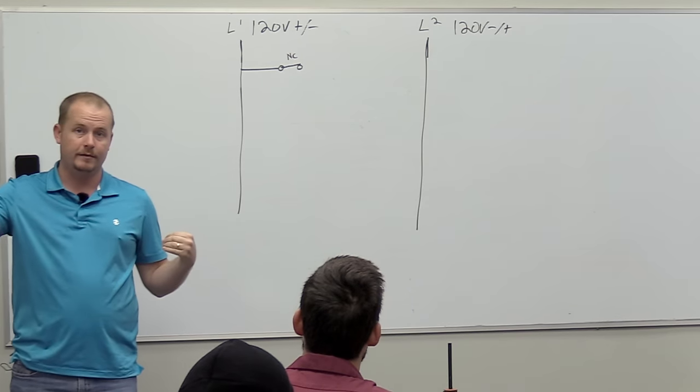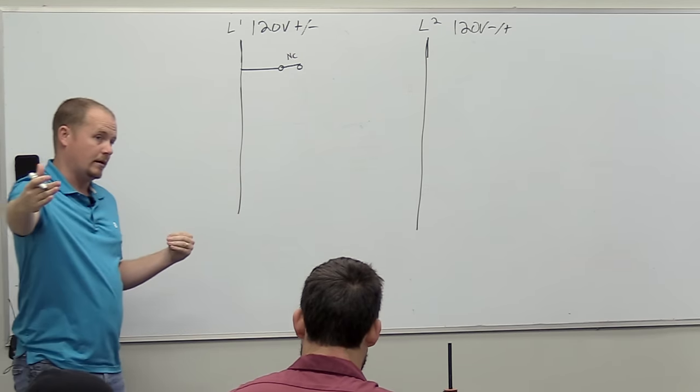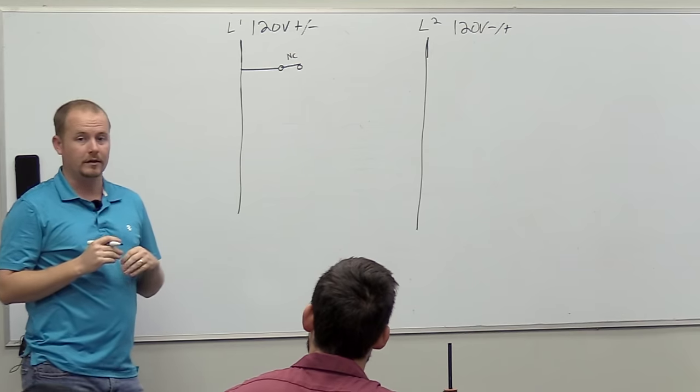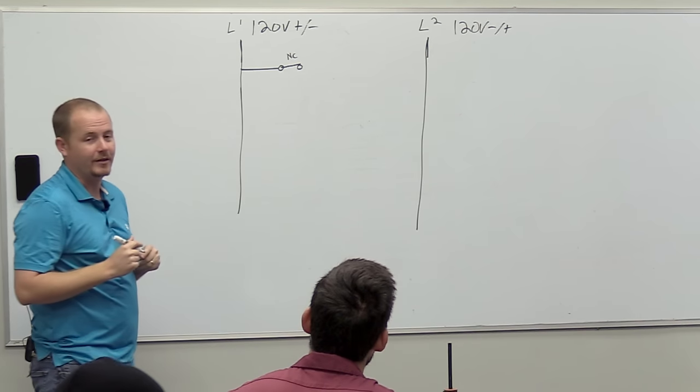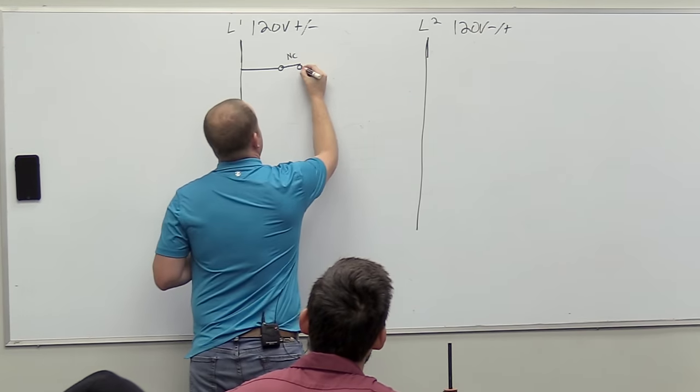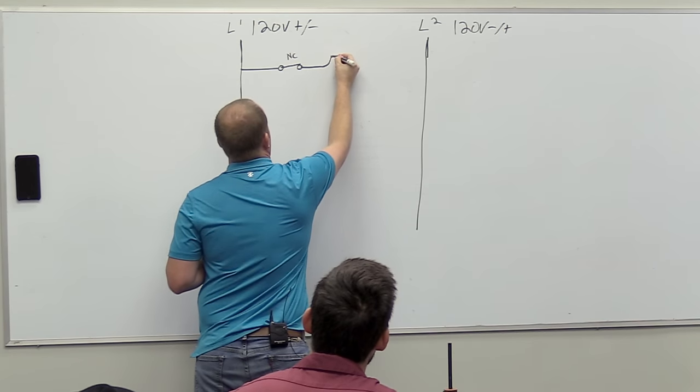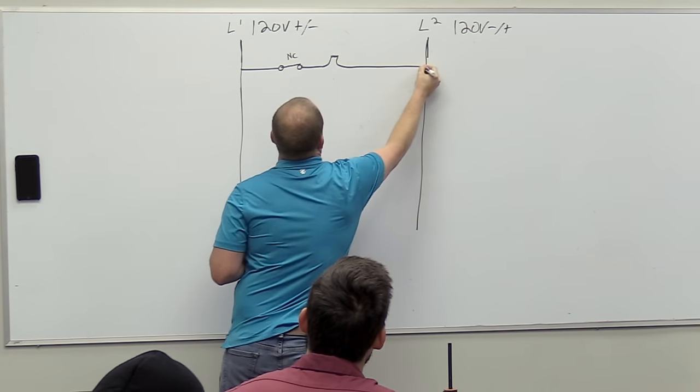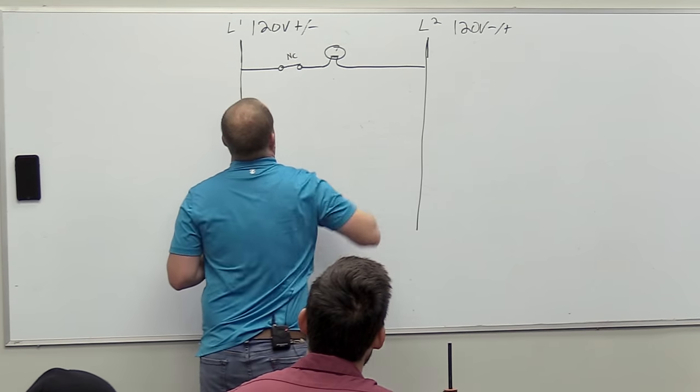Closed means that electrons can move through it. There's a path. What's NC stand for? Normally closed. Normally closed. You knew that. Smarty pants. And we're going to have a little light here. So this is a 240 volt light. You don't see a lot of those. So we got a light bulb there.